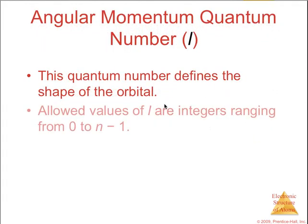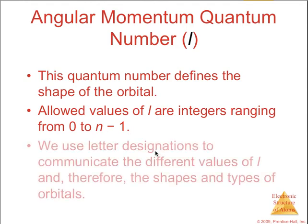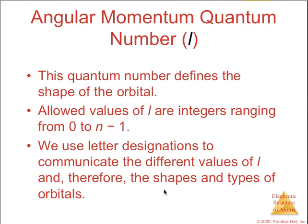Next is the angular momentum quantum number, which is l. This defines the shape of the orbital. Allowed values of l are integers ranging from zero to n minus one. We use letter designations to communicate the different values of l, which really is the shapes and types of the orbitals.